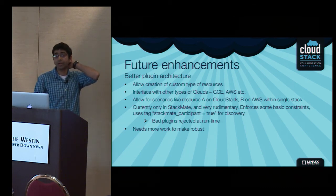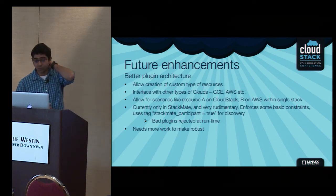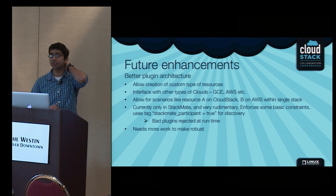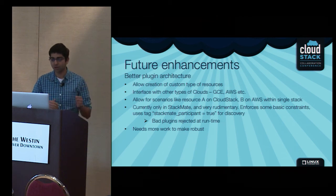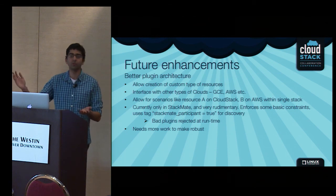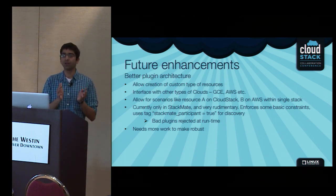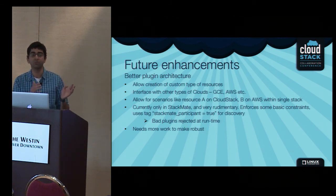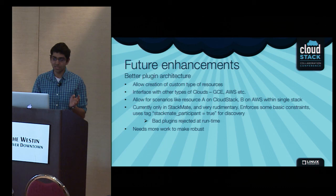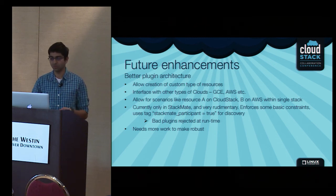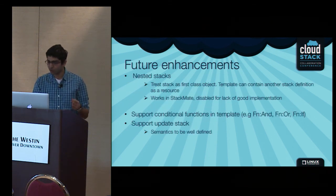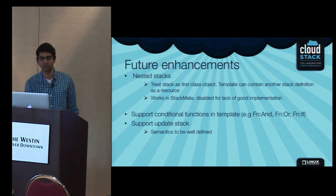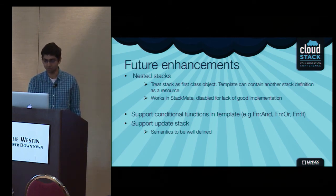Going forward: it currently supports CloudStack and a few AWS resources. Given the plugin architecture where everything is essentially a workflow, we want to provide the ability for one resource to be created on CloudStack, another on Google Compute Engine, a third on AWS — managing dependencies and using wait conditions and metadata server to provide synchronization across clouds. What we need for that is someone to write the participants for GCE and AWS. We also want nested stacks, treating stacks as first-class objects.